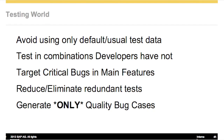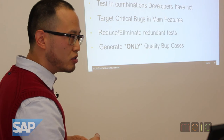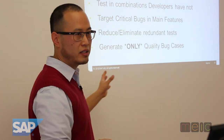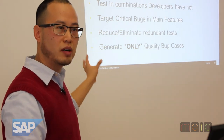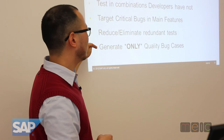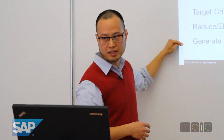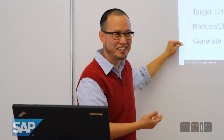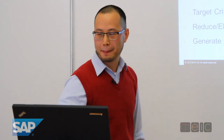So in testing, avoid using only default test data. Test combinations that developers don't have. Try to target critical bugs and main features. Reduce and eliminate redundant test cases — that's where some of that math comes in. You only want to generate quality test cases. What's the use of generating a ton of fertilizer? You want to get those diamonds.